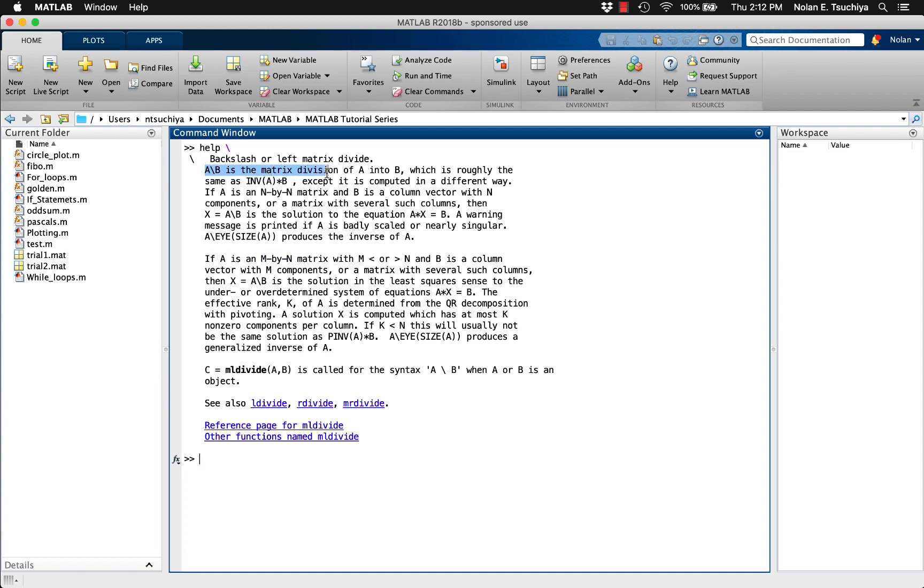For example, if A is invertible and square, then the solution x equals A backslash B is essentially the same thing as left multiplying by the inverse of A. It will even warn you if the matrix is close to being singular, in other words, if the determinant is close to zero.